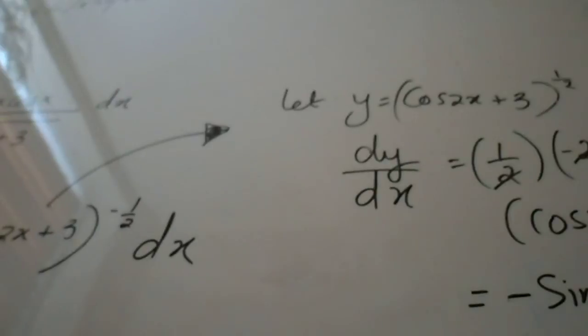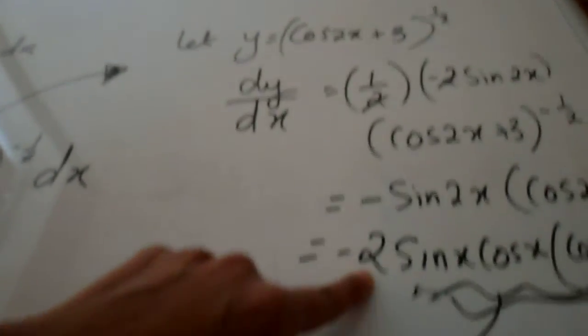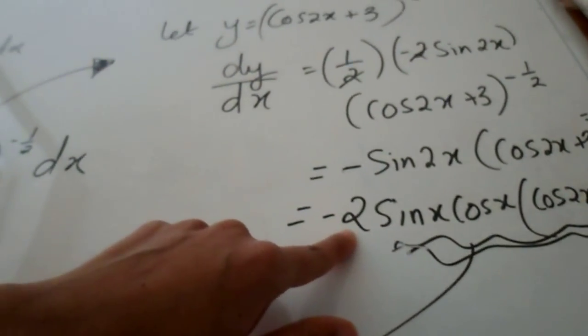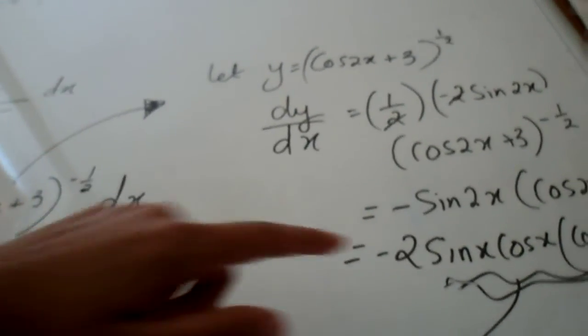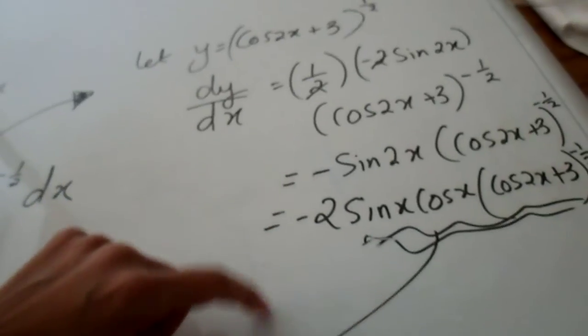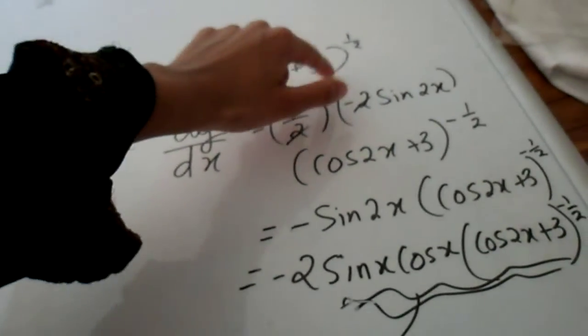So I am going to change the constant minus 2 to 1 by multiplying it by minus half. So in other words when you integrate if you were to integrate this you'd get cos 2x plus 3 to the power of half.